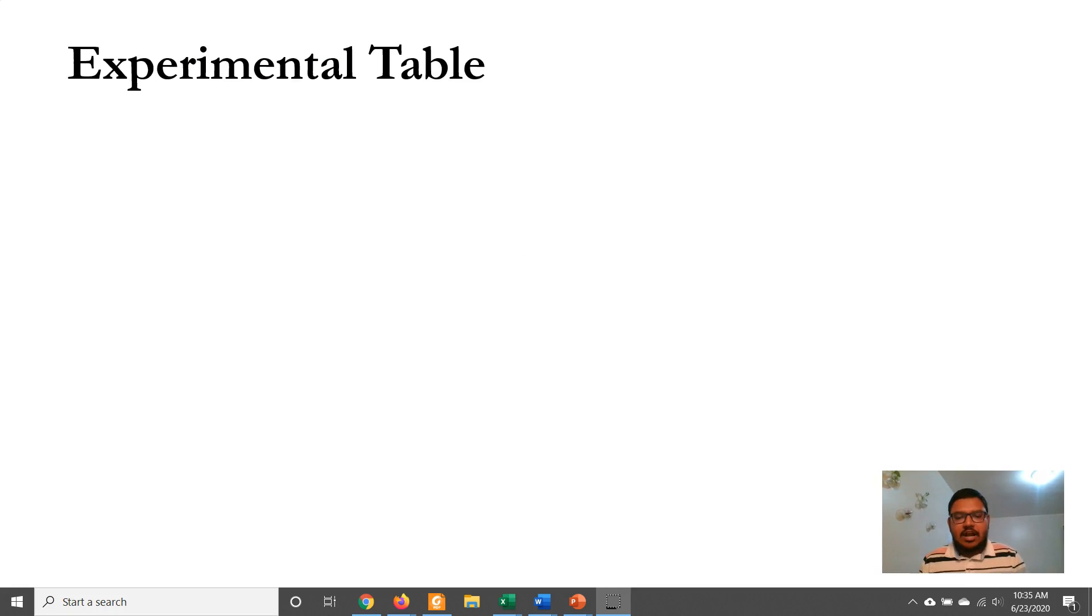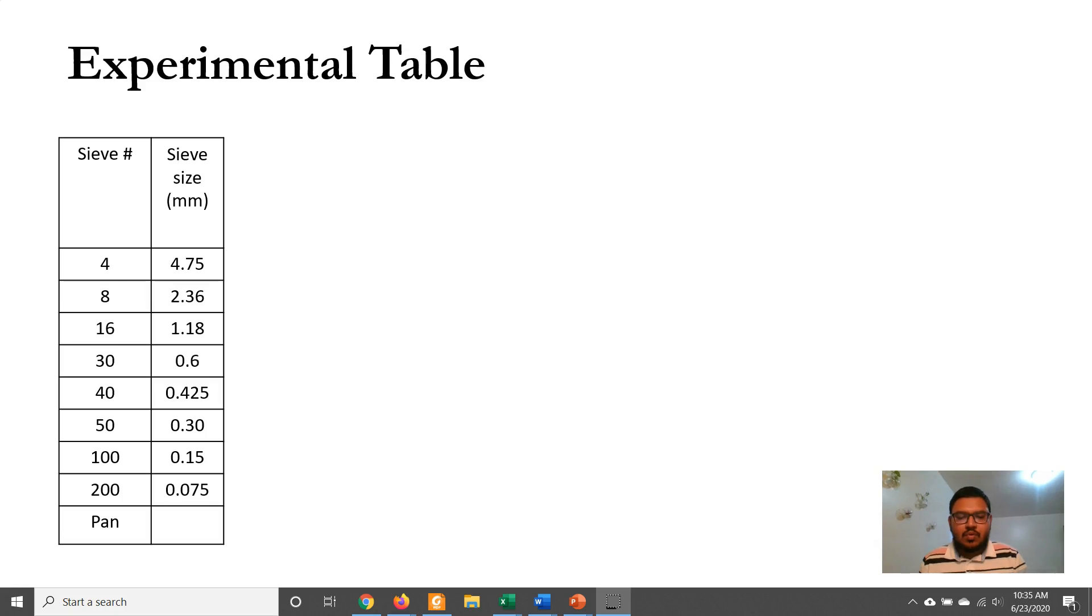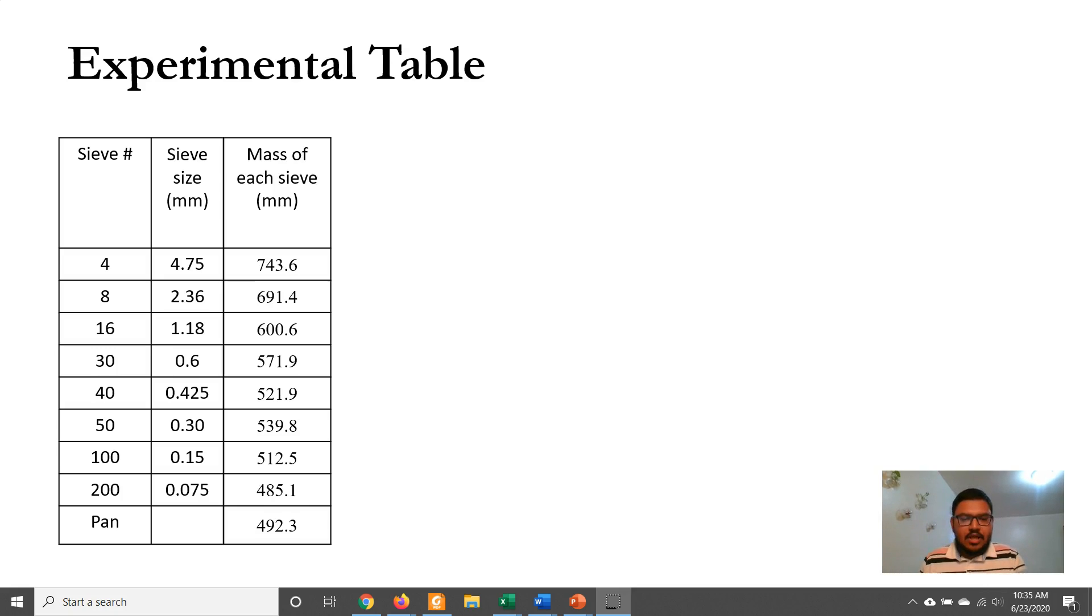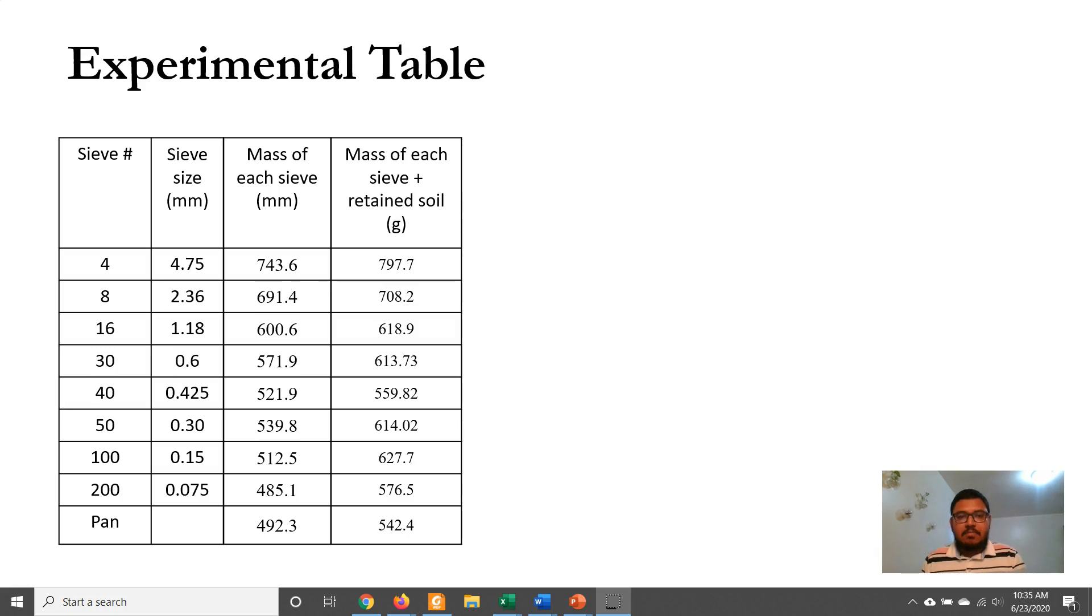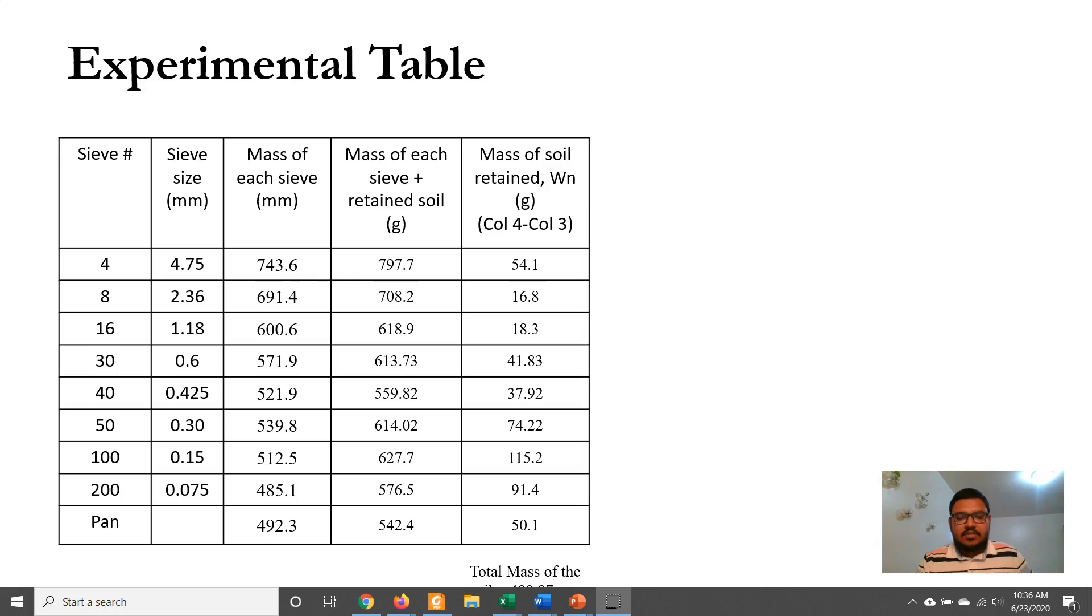For the calculation, at first, we will note down the sieve numbers and sieve sizes that were used in the experiment. The mass of each sieve was recorded. Mass of each sieve with retained soil was also recorded. The mass of retained soil can be obtained by subtracting the mass of sieve from the mass of sieve with soil.